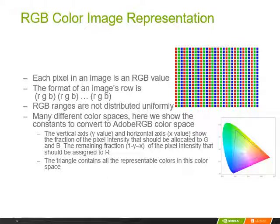We can think about the information as: one, the total intensity of the pixel, and two, a distribution of the intensity among R, G, and B. So if we take out the total intensity, we can think about each pixel as a linear combination of the representation of R, G, and B. This leads to the bottom picture, where we show that each representation forms a triangle of possible linear combinations of red, blue, and green in the color space.